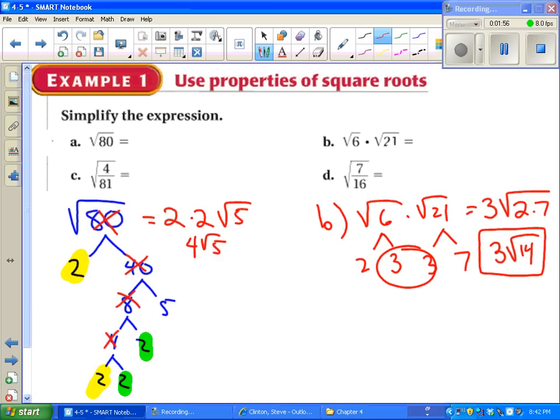Part C, that one's actually super friendly. We get to split this up into two square roots first. Square root of 4 or square root of 81. And square root of 4 we should know is 2. And square root of 81 we should know is 9. We get to stop there. There's no more work to do.